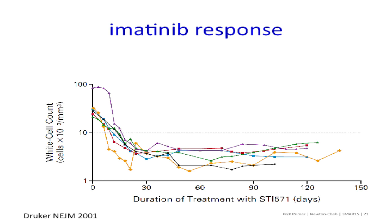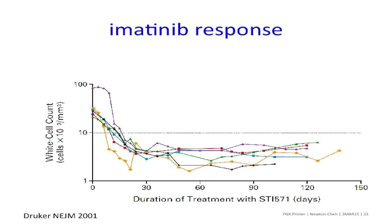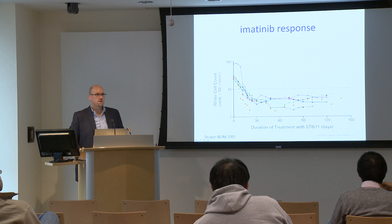Here you can see the white blood cell count in a trial. The normal range is about 5,000 to 10,000 white blood cells per cubic millimeter. In the leukemic range — anything from 10,000 to 100,000 — this is where patients start out with CML. And you can see that within days, treatment with Gleevec leads to a dramatic reduction in white blood cell count, really identifying the Achilles heel of specific cancers that have key drivers.